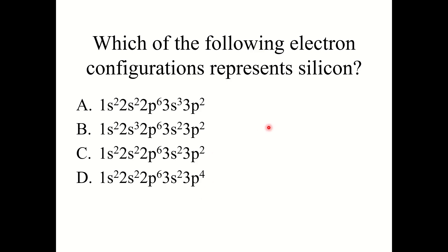Knowledge check: which electron configuration represents silicon (Si)? The correct answer is C: 1s2, 2s2, 2p6, 3s2, 3p2. That is the correct electron configuration for silicon.